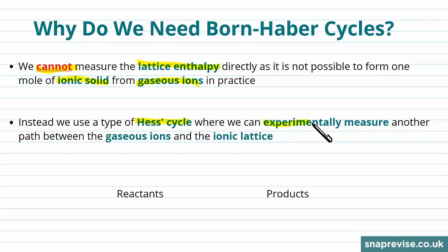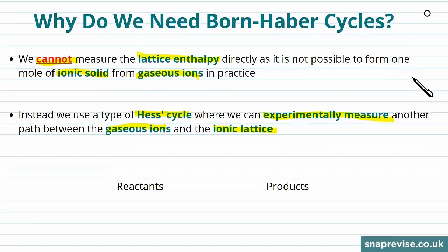With Born-Haber cycles we can experimentally measure another path between gaseous ions and the ionic lattice, and then we use Hess's Law to find the lattice enthalpy that we can't measure directly.